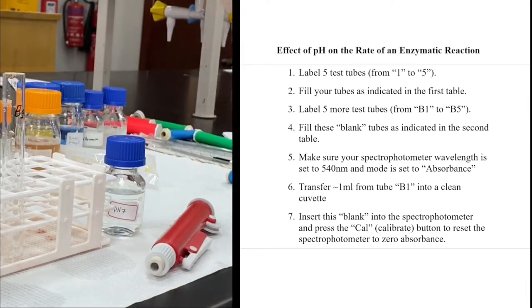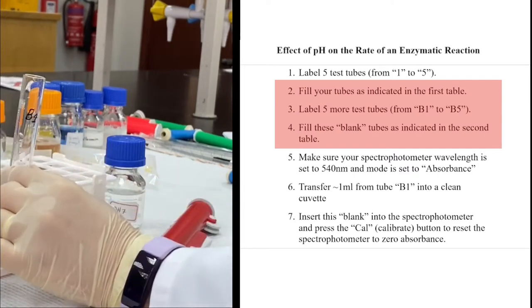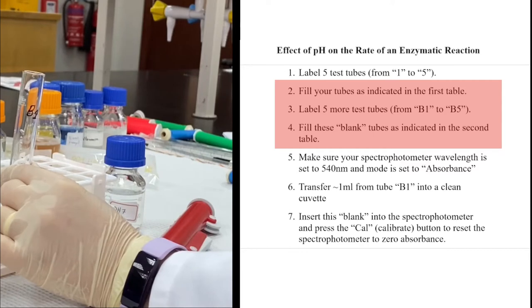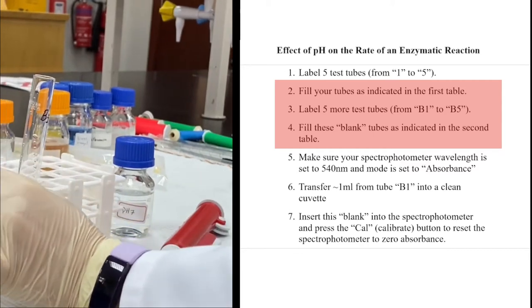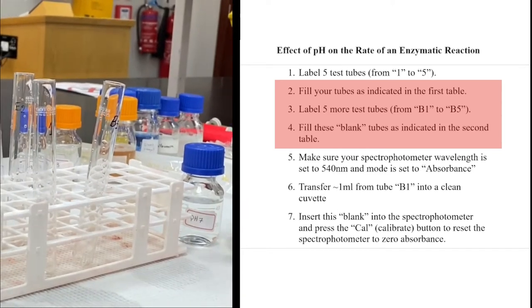I have to prepare two sets of test tubes: the blank, because I'm going to use the spectrophotometer to detect the formation of benzoquinone, the brown pigment, and the experimental test tube. The blank has to contain all the chemicals except the substrate, because I don't want the reaction to happen inside the blank.